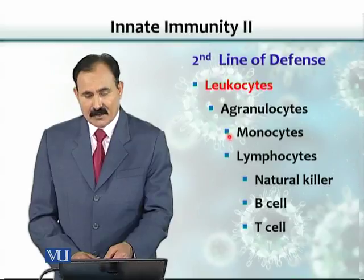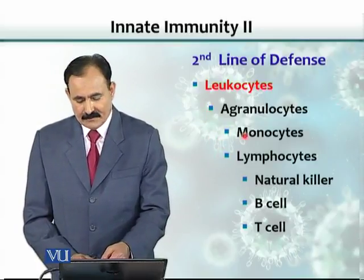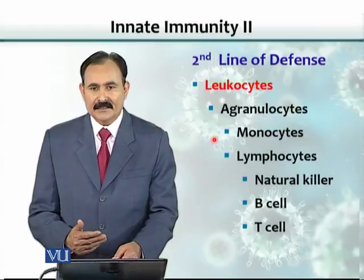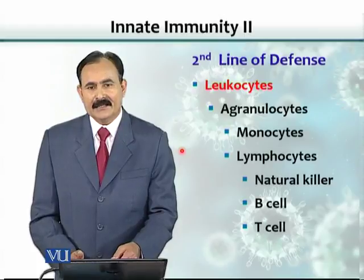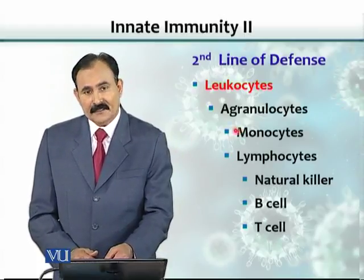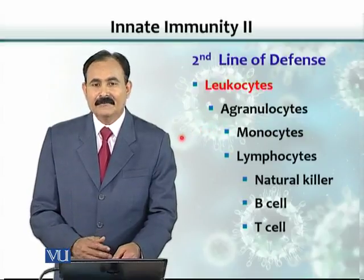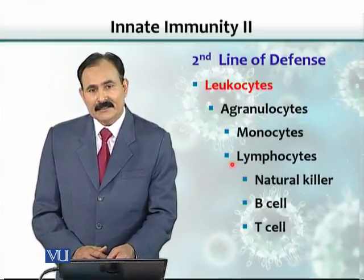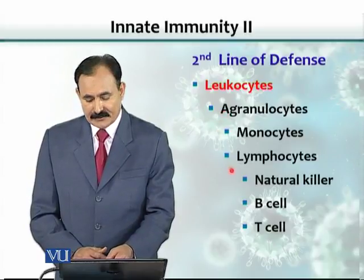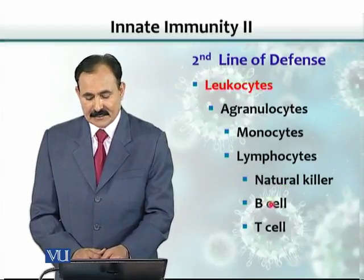Agranulocytes include monocytes and lymphocytes — they do not have granules. A monocyte present in the blood is called a monocyte, but once it leaves the blood vessels it is named a macrophage. So macrophages are derived from monocytes — they are the same cell once it reaches the tissue. There are three different types of lymphocytes: natural killer cells, B cells, and T cells.